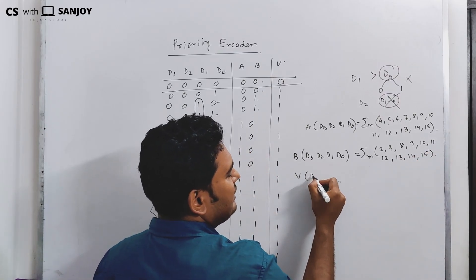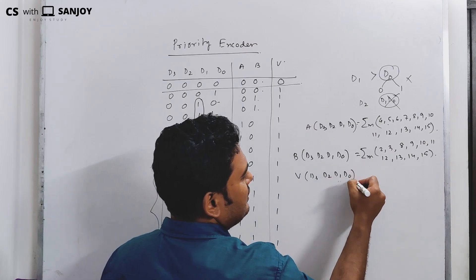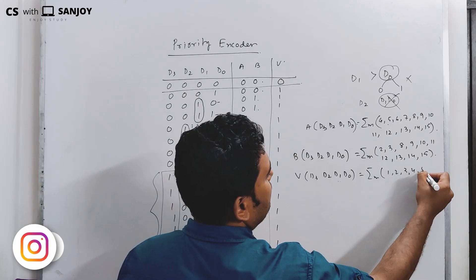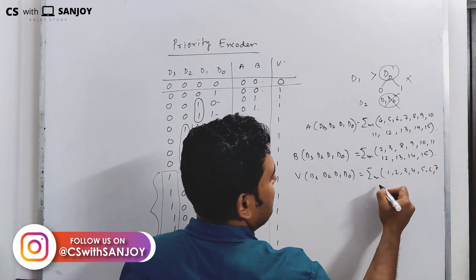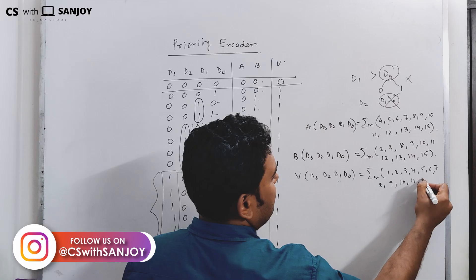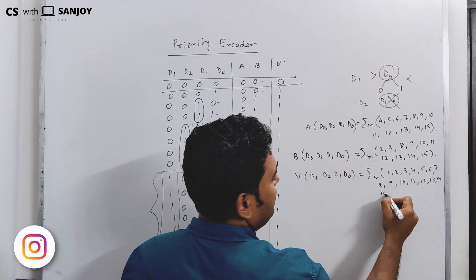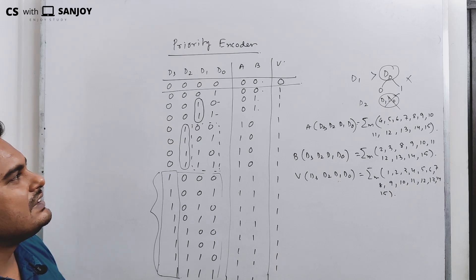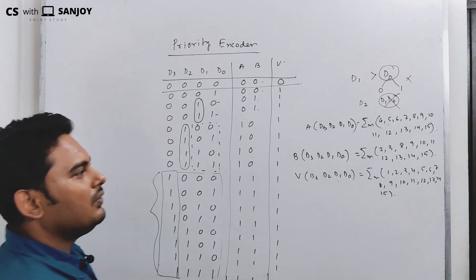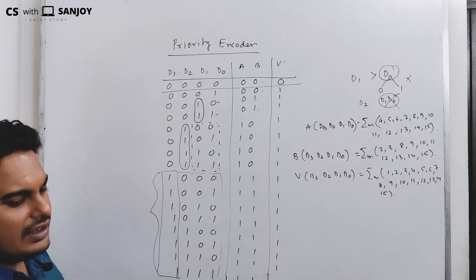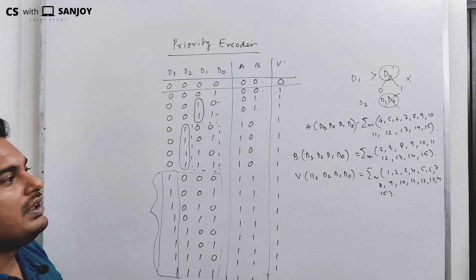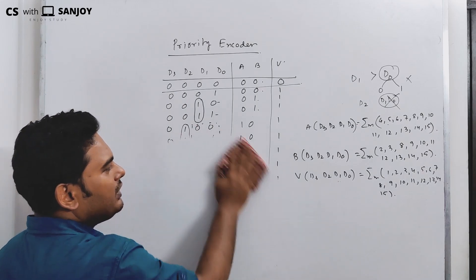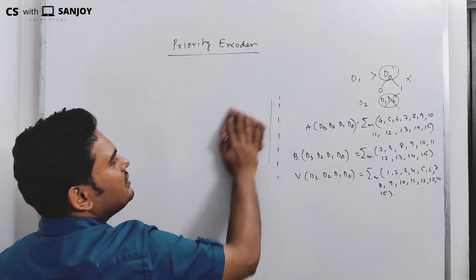And for valid V, excluding 0 and considering all others: minterms 1 through 15. That is, V equals D0 plus D1 plus D2 plus D3. So for the three outputs A, B, and V, we can develop separate K-maps.